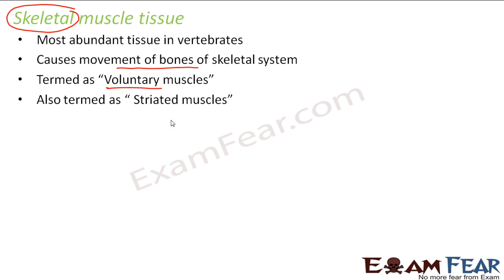Skeletal muscles are also termed as striated muscles. When these muscle tissues were observed under a microscope, alternate dark and bright bands were seen — one dark, one light, one dark, one light. So because of the presence of these stripes or striations, these muscles are known as striated muscles. The alternate dark and light bands are called striations. So a skeletal muscle tissue can be called voluntary muscle tissue or striated muscle tissue.